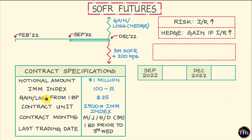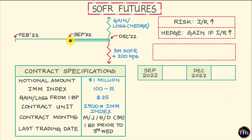The $25 gain or loss from a one basis point move in the chosen rate is also the same for both contracts. When it comes to differences: if this contract were instead the September 2022 eurodollar futures contract, please note that the fixing for LIBOR would have happened two business days before the third Wednesday of September 2022.